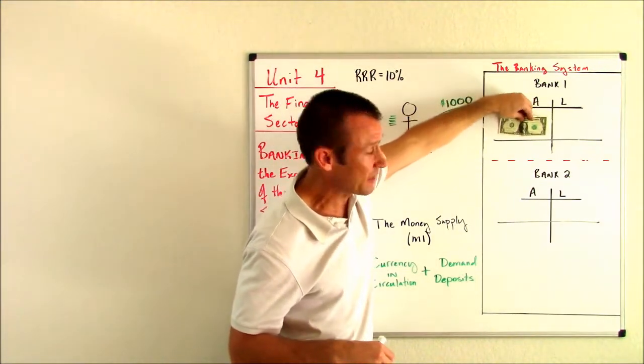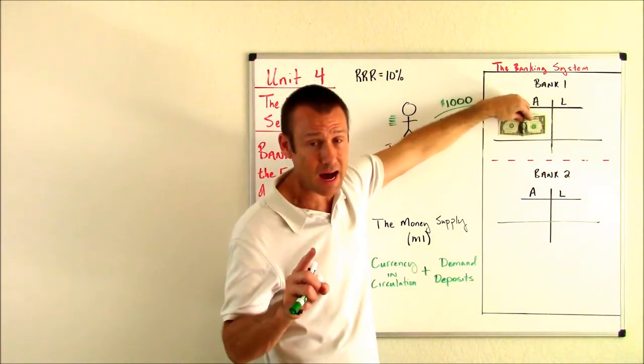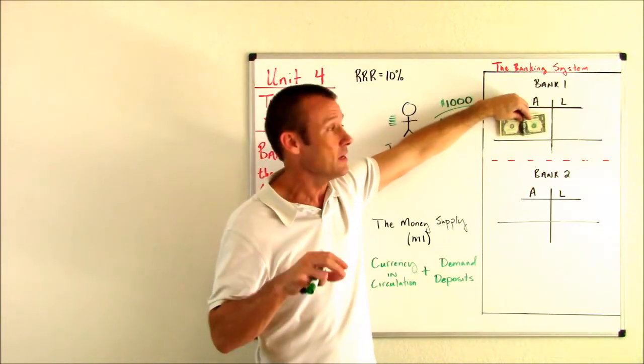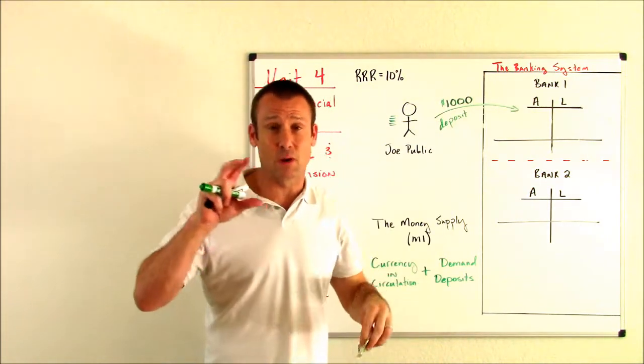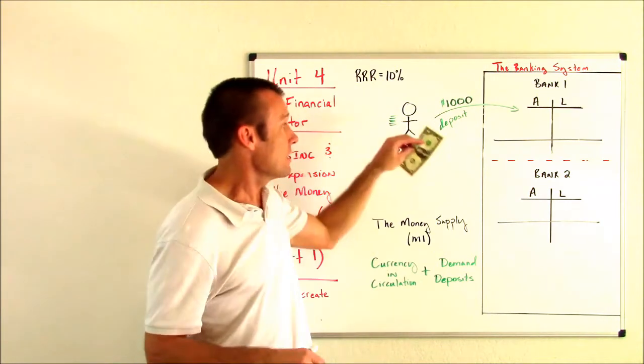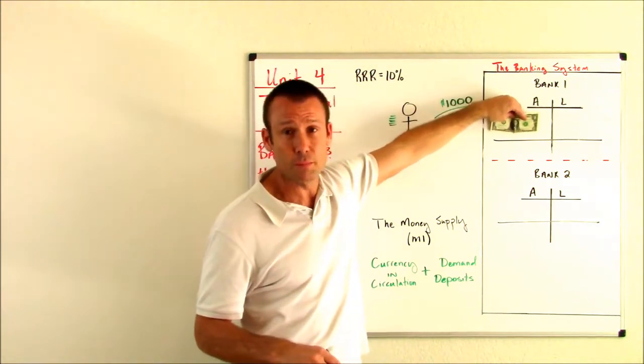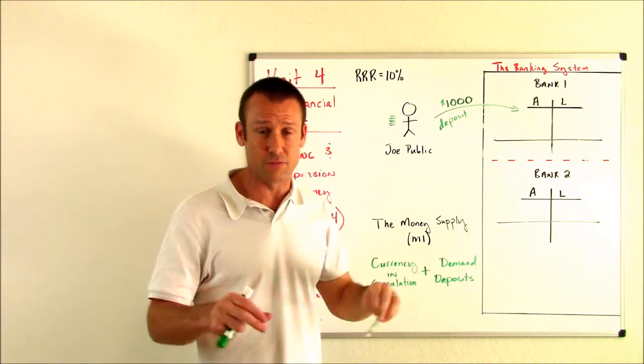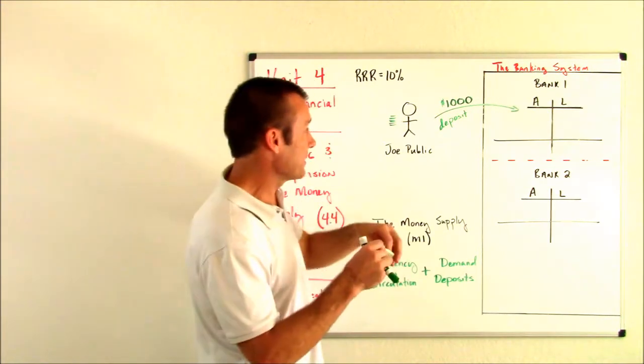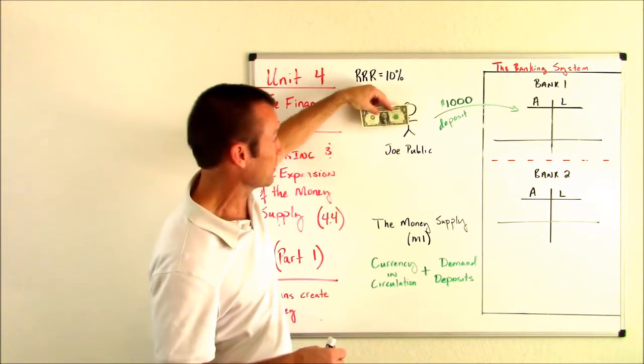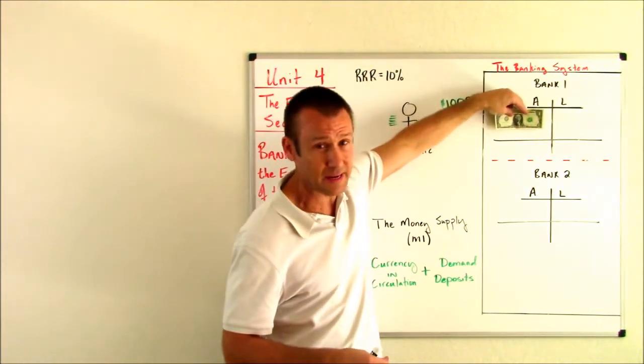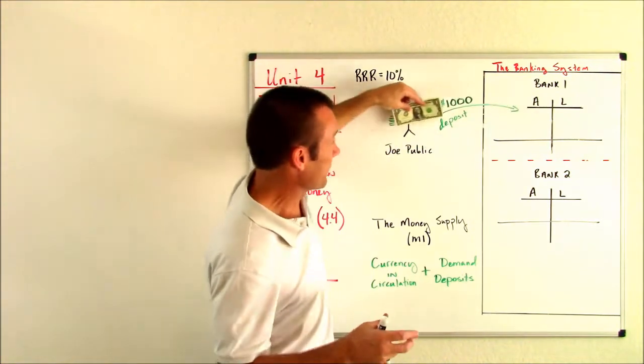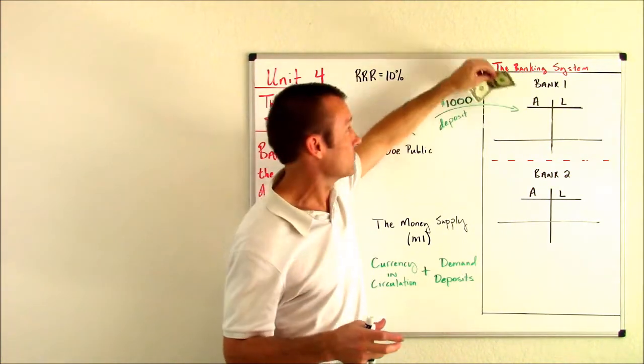When these pieces of paper go into bank one, bank one cannot use these pieces of paper to go buy goods and services. In other words, bank one, say they wanted a new sofa for their lobby, they could not use Joe's deposit of these pieces of paper to go buy that sofa. They are forbidden from doing that. So these pieces of paper in Joe's hand, currency in circulation, when they head into a bank, they become what we call bank reserves. So when they go into the bank, they're bank reserves.